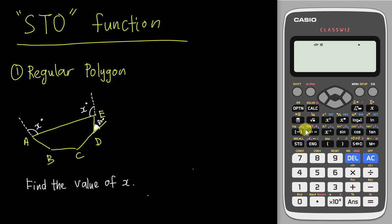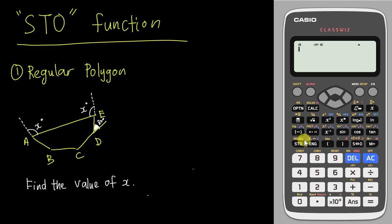A lot of you are probably curious about the red color letters above the buttons — like A, B, C, D, E, F, and then X, Y, M and so on. If I tap shift then recall, you can see a recall button. Right now all of my values are basically zero. You can store a specific number into all these letters from A, B, C, D, E, F, X, and Y. M will be slightly different — I'll explain M in the future.